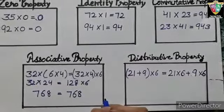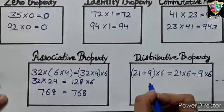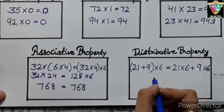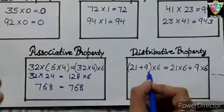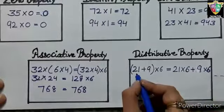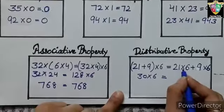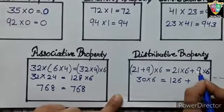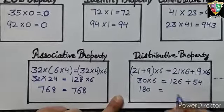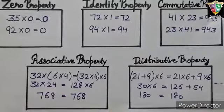Now, the next property is the distributive property of multiplication. This states that multiplying a sum gives the same result as multiplying each addend separately and then adding the products together. (21 plus 9) multiplied by 6 equals 21 multiplied by 6 plus 9 multiplied by 6. Here, 21 plus 9 is 30. 30 multiplied by 6 equals 180. 21 multiplied by 6 is 126 plus 9 into 6 is 54. 126 plus 54 is 180. So the product is same. Thank you.